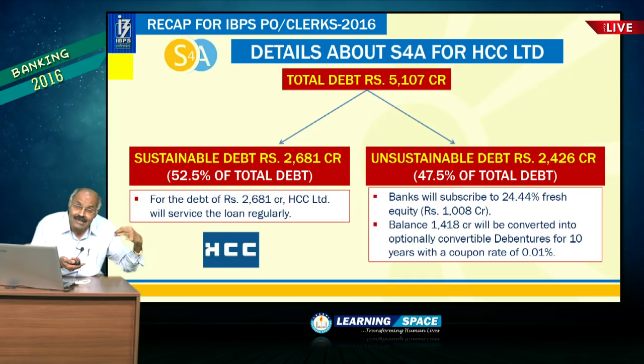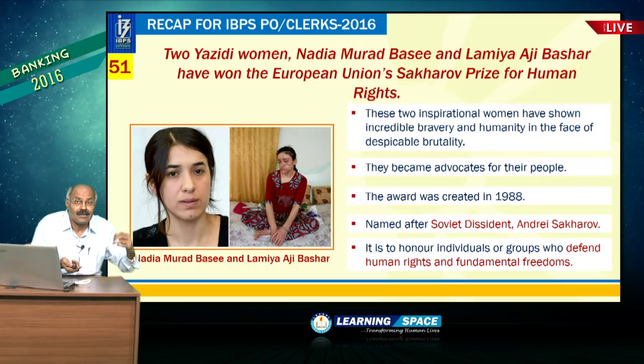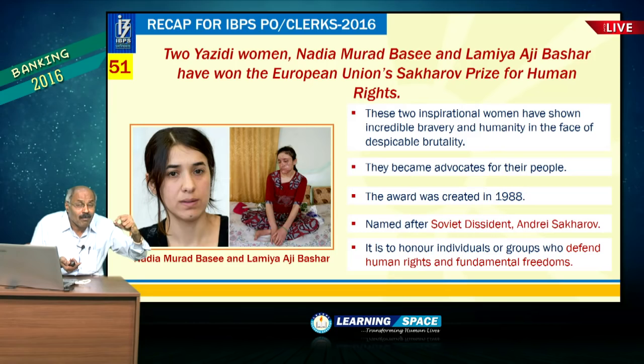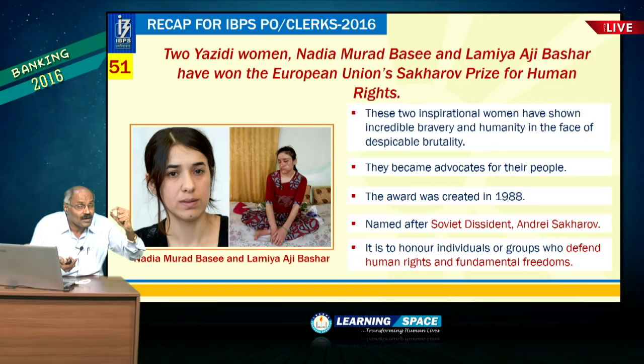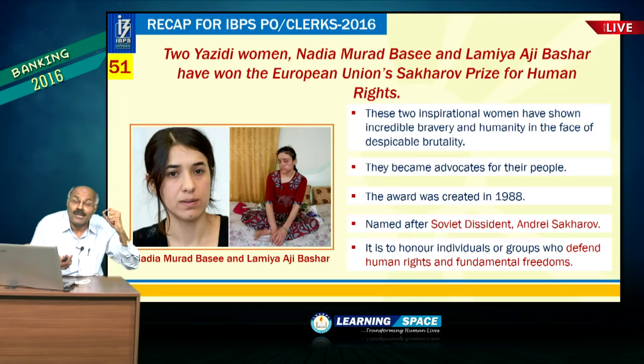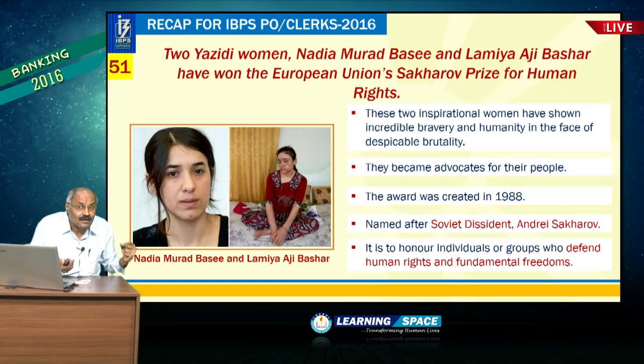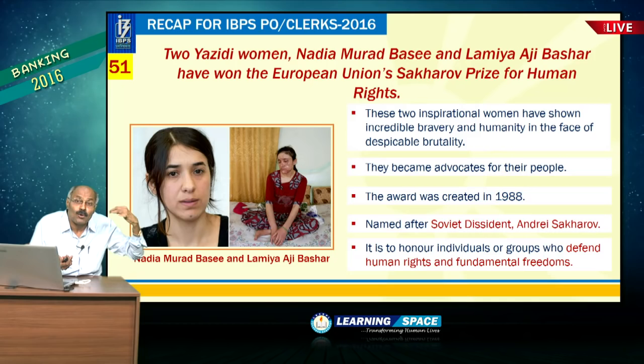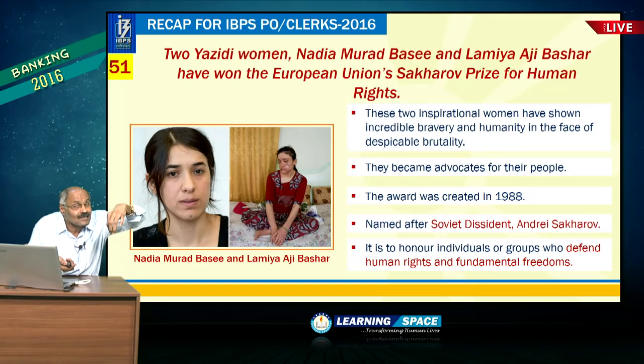Two Yazidi women received the Sakharov Prize. Maximum Yazidi population is in Iraq; maximum Kurdish population is in Turkey; Rohingyas are in Myanmar; Madhesis are in Nepal. The Sakharov Prize was started by the European Parliament and is given to persons or organizations defending human rights and fundamental freedoms.